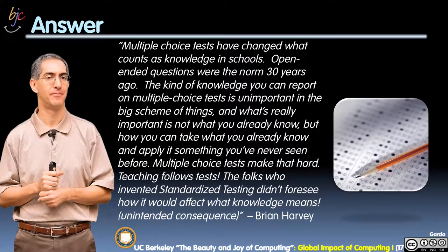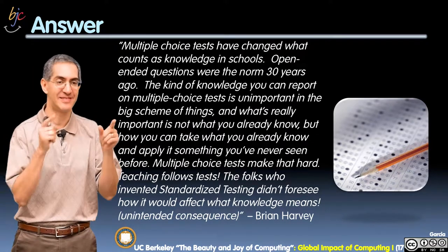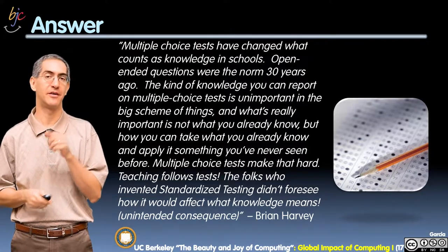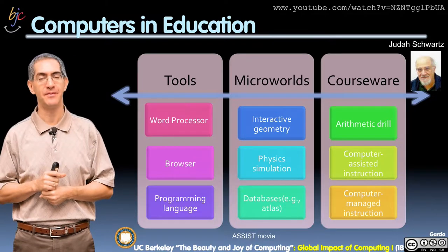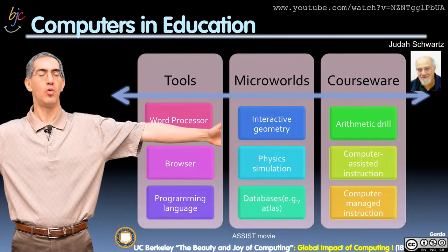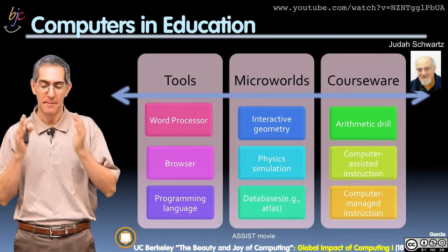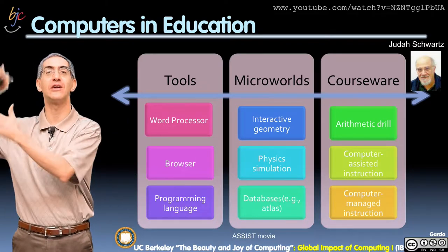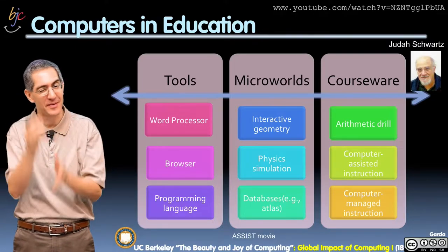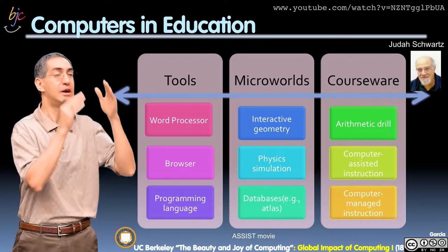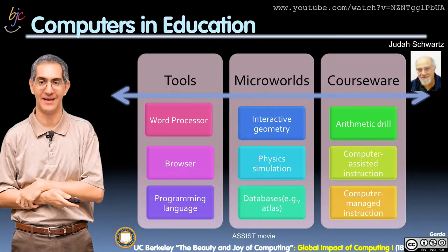The unintended implication of technology is that it now affects what knowledge means — that's called an unintended consequence. Computers in education cover a huge swath of uses, categorized by educator Judith Schwartz as tools, microworlds, and courseware. Tools are general-purpose. Microworlds are general but limited to a particular application. Courseware is drill and learning management systems where you follow exactly what is prescribed. It's a continuum of how much freedom the student has.